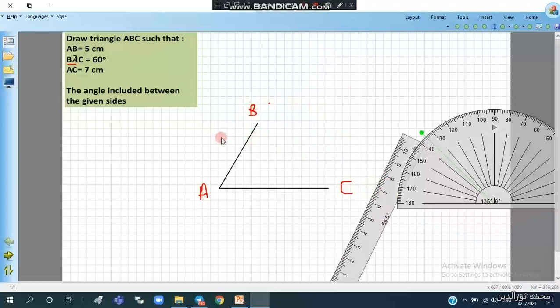So I have AB equals 5 cm, AC equals 7 cm, and this angle is 60 degrees.